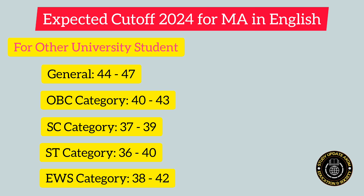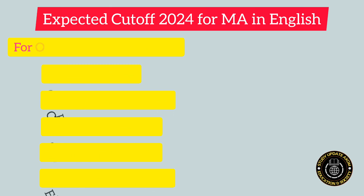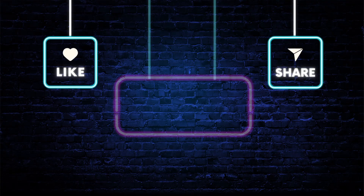These are expected cutoffs, not the actual ones. We will have to wait for the actual cutoff until the university publishes its merit list. These are based on the previous year cutoff. If you have benefited from this video please do like and share, and if you want the expected cutoff for any other subject please do comment. Thanks for watching.